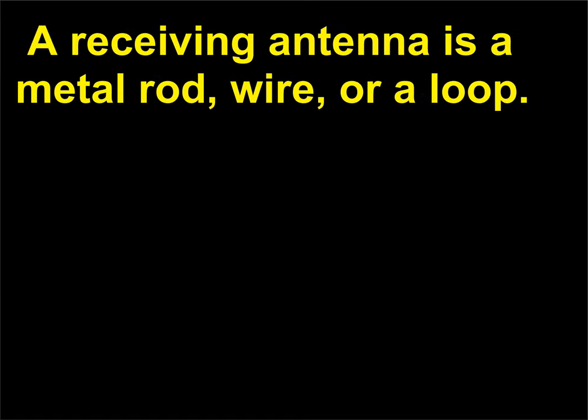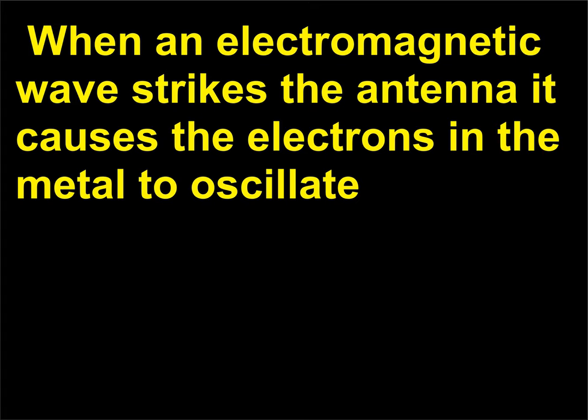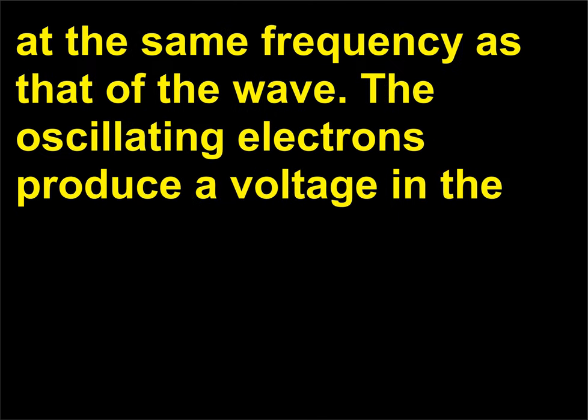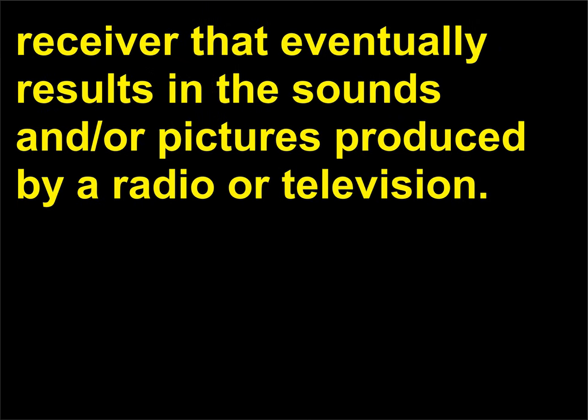A receiving antenna is a metal rod, wire, or a loop. When an electromagnetic wave strikes the antenna it causes the electrons in the metal to oscillate at the same frequency as that of the wave. The oscillating electrons produce a voltage in the receiver that eventually results in the sounds and/or pictures produced by a radio or television.